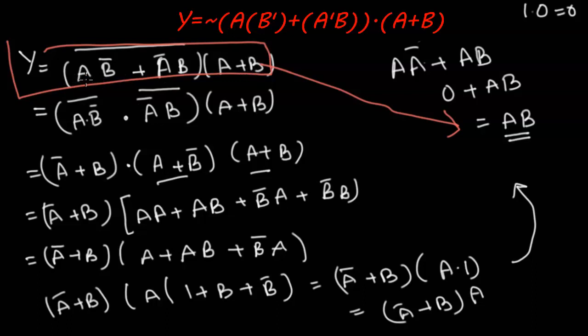The original expression would have required eight gates — one, two, three, four OR-ing, five AND-ing, the negatives make six, seven, and eight — which now got reduced to just one AND gate. This is why simplification of Boolean expressions is very important to reduce the number of gates. Keep practicing with sample questions to identify which laws to apply. Thank you for watching — please like, share and subscribe. Happy learning, see you next time!